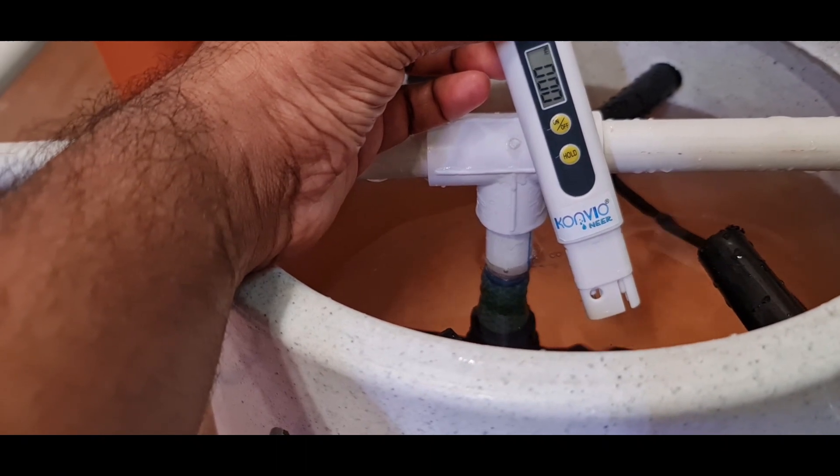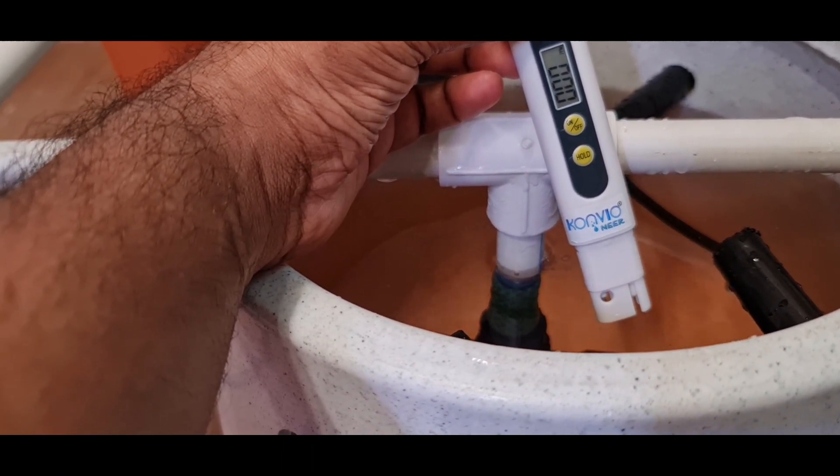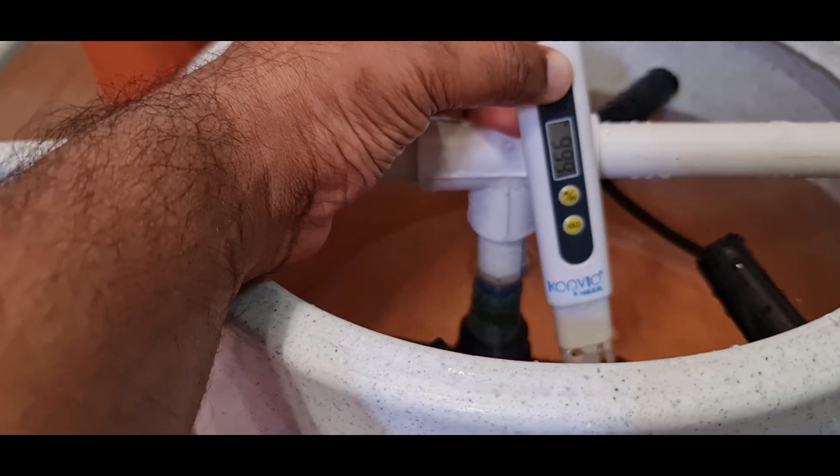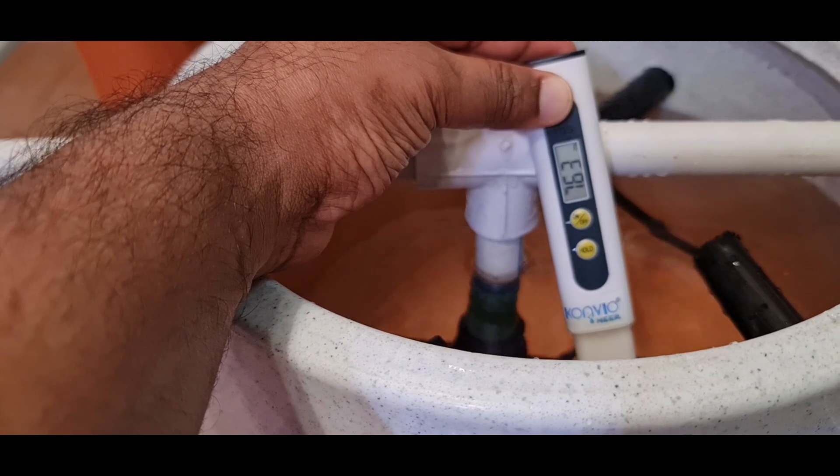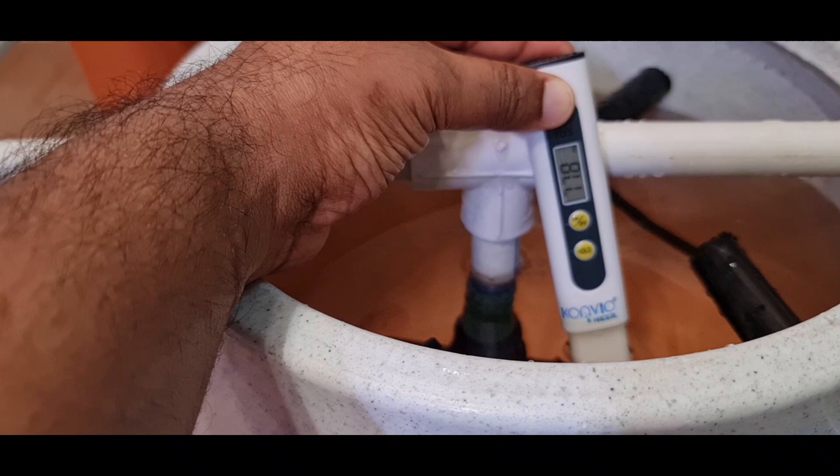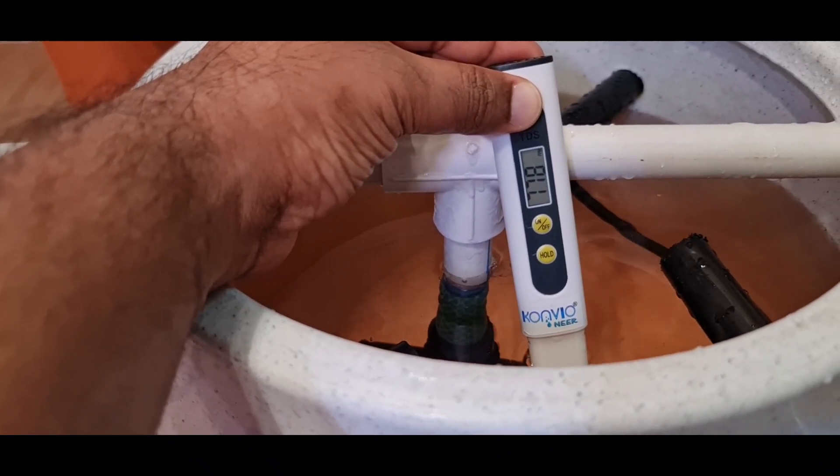Let us check the TDS of our nutrient solution after adding our nutrients to plain water. Previously, it was nearly 180 and let us see how much it is now. It is showing 780. The TDS of our nutrient solution has increased by 600 points.